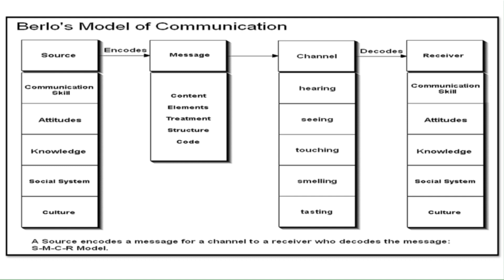C stands for channel, which is the signal carrier or medium. Elements of the channel include the senses — hearing, seeing, touching, smelling, and tasting. R stands for receiver, who is the recipient of the message from the sender. The receiver usually gives feedback to the sender to make sure the message was properly received. Elements of the receiver include their communication skill, attitude, knowledge, and culture.